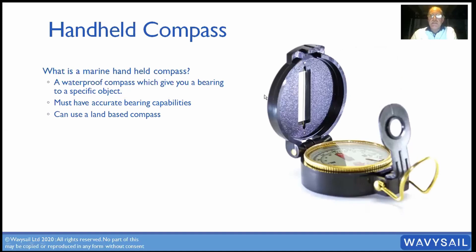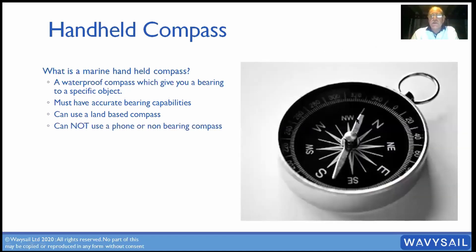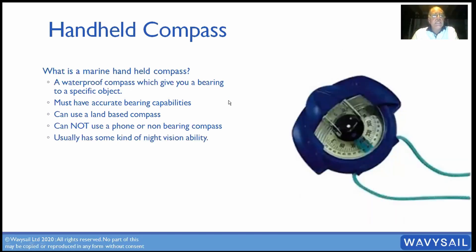Land-based compasses can technically be used if they have an accurate sighting line, but from experience they rust and fall to pieces and don't work terribly well. A basic compass without that sighting line you can't use — you can't get an accurate bearing. Your phone may have a compass but you can't line it up accurately enough. You need something like a marine-based compass with an accurate, precise sighting capability.